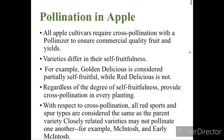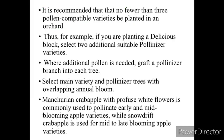Pollination is the most important aspect in apple. Apple cultivars along with the pollinizer show promising results in good quality of fruit. Varieties differ in their self-fruitfulness; for example, Golden Delicious is considered partially self-fruitful while Red Delicious is not. Regardless of the degree of self-fruitfulness, cross-pollination is necessary in apple. It is recommended that not less than 3 pollinizers should be present in an orchard. Manchurian crabapple with profuse white flowers is commonly used to pollinate early and mid-blooming apple varieties.